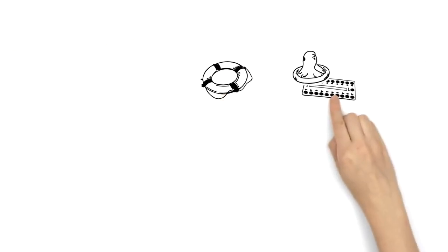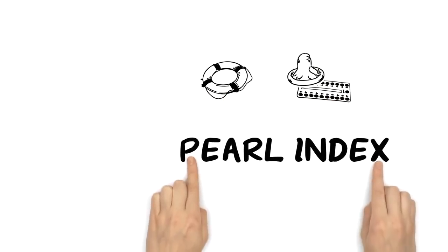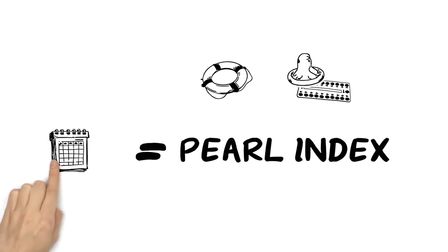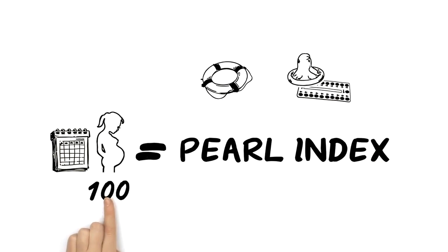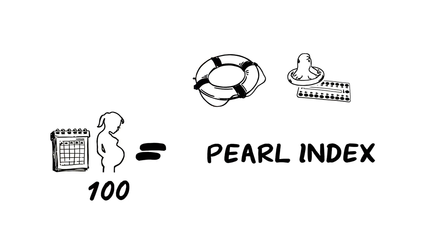You can check the safety of a method through the Pearl Index, which calculates the annual number of pregnancies per 100 women. The safer a method, the lower the value.